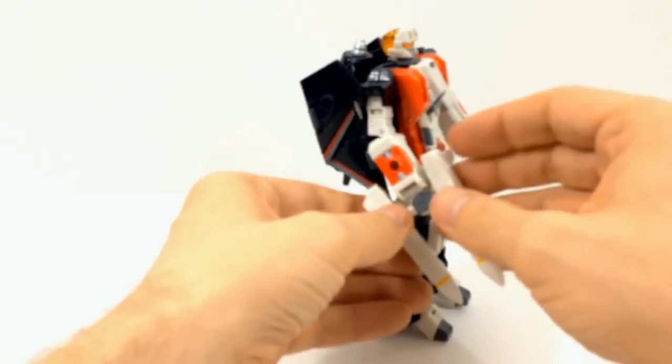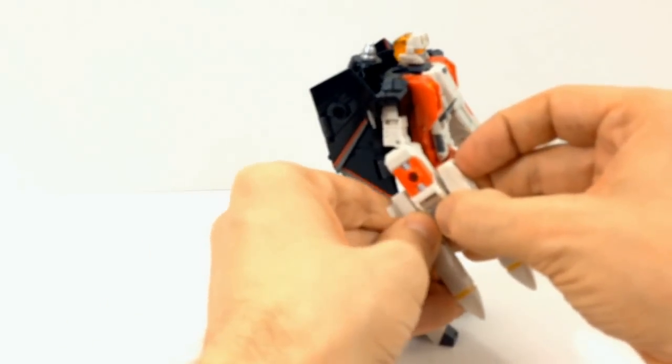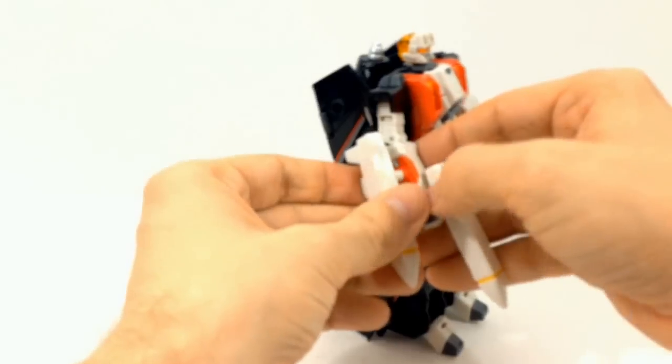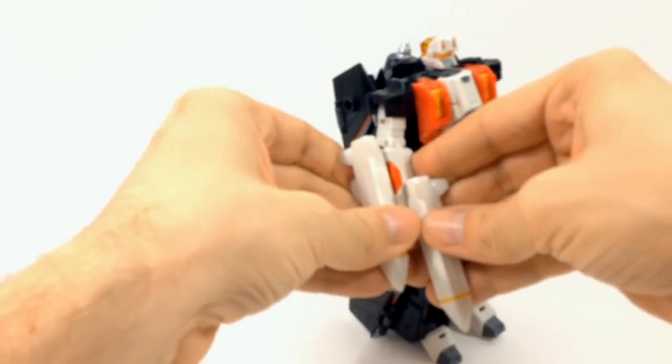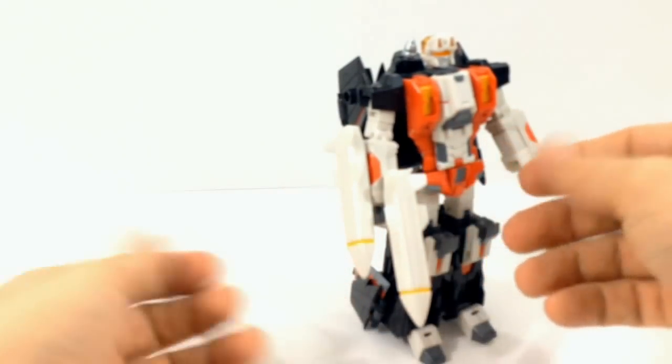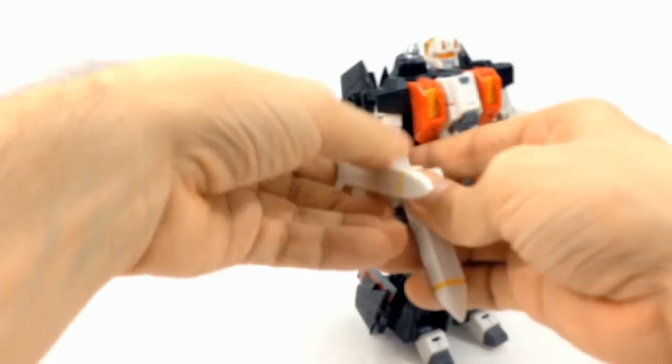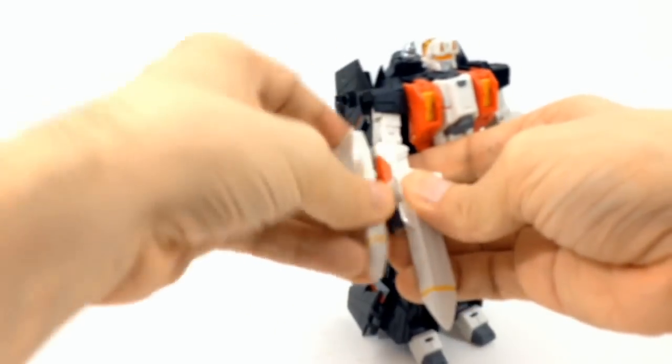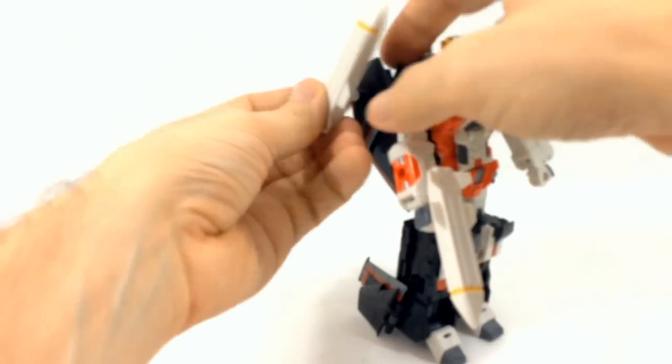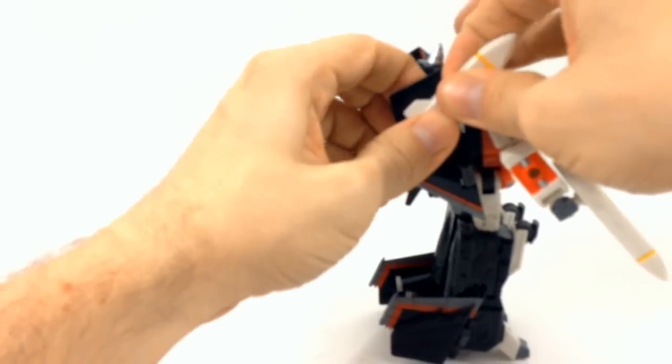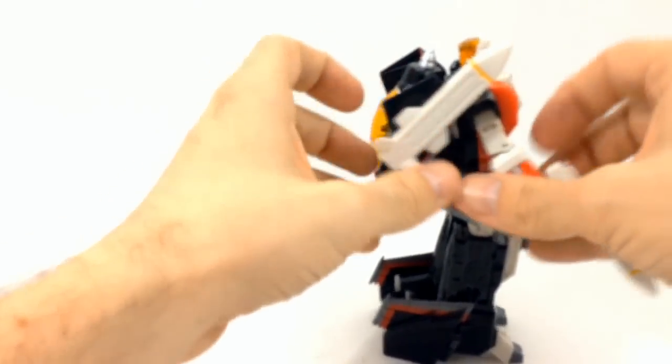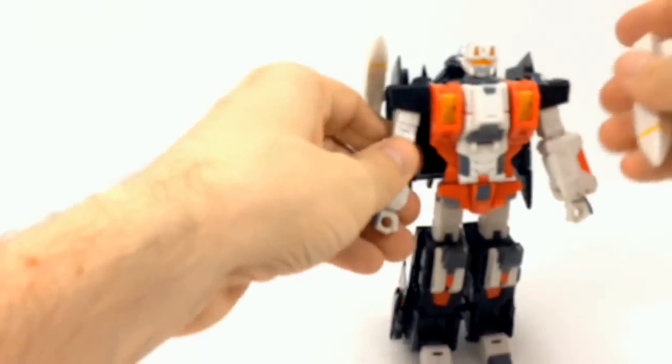Or you can also do the under and over. Or you can attach them to the side of his arm. Or like I like to do is I just like to put them up here and kind of have them hanging off over his shoulders.